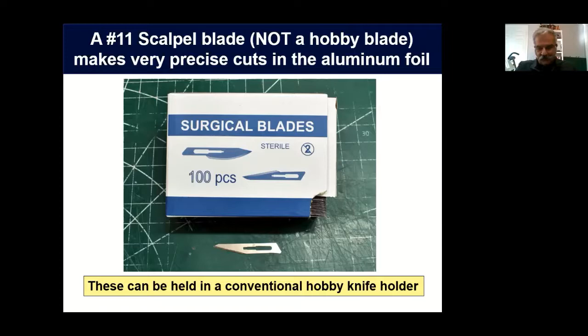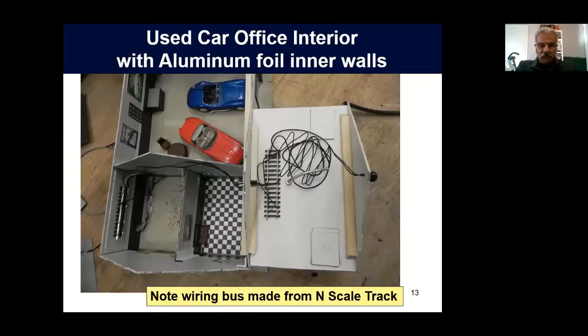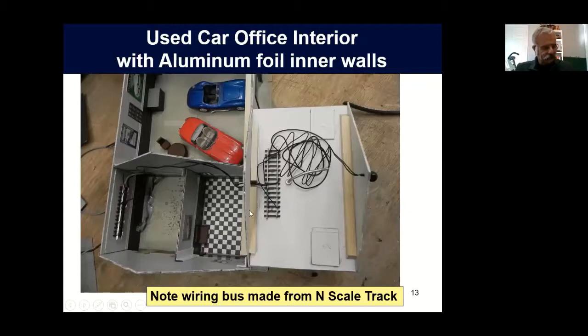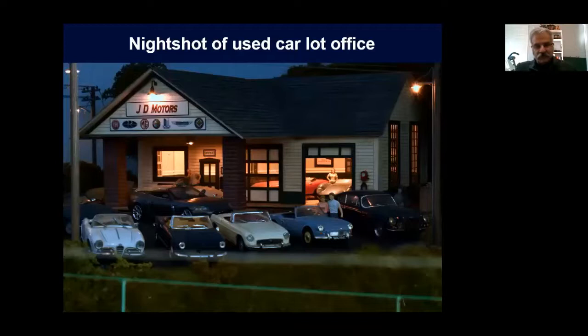The walls I showed earlier were from a used car office — I'm also a car nut, a lug nut counter. This is a Bar Mills wood kit. Note I use a wiring bus from N-scale track — it makes lighting very easy. You just connect all the wires from each of the rooms to that bus, and then that connects to your power source. And this is what the used car lot looks like at night. You can see nice uniform illumination because the bulbs are up in the ceiling and the aluminum foil is reflecting, and it has a pretty good effect.